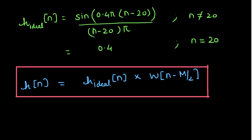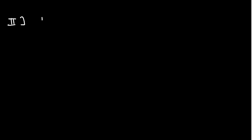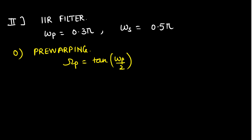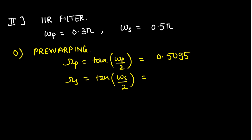Now let us consider the case of the IIR filter. We have omega_P equal to 0.3*pi and omega_S equal to 0.5*pi. The first step is pre-warping: omega_P equals tan(omega_P / 2) which comes out to be 0.5095, and omega_S equals tan(omega_S / 2) which comes out to be 1.